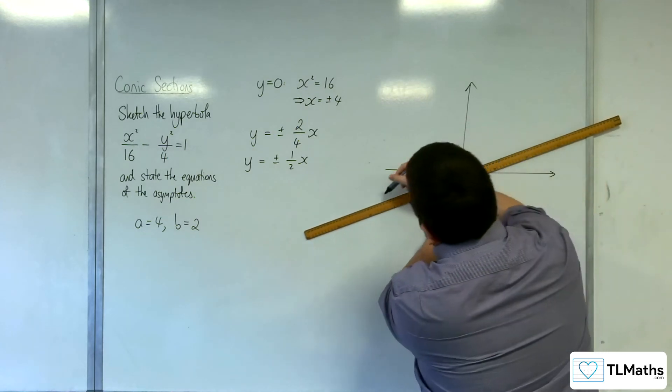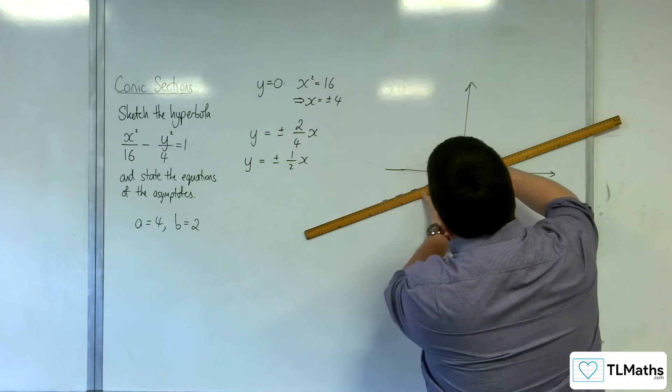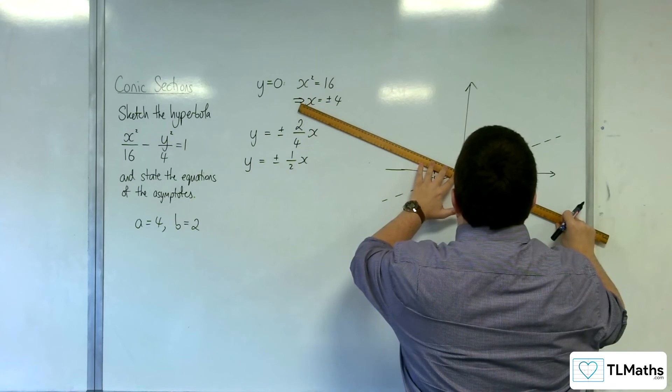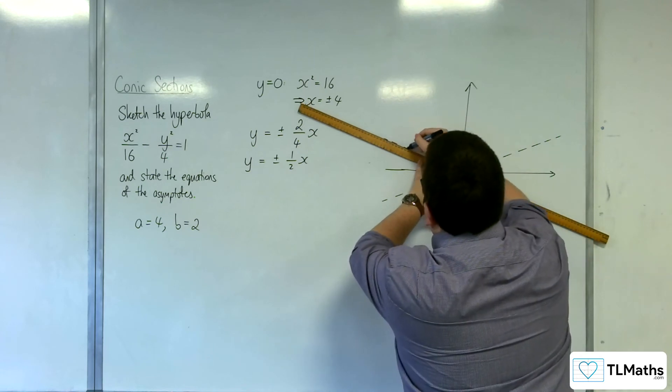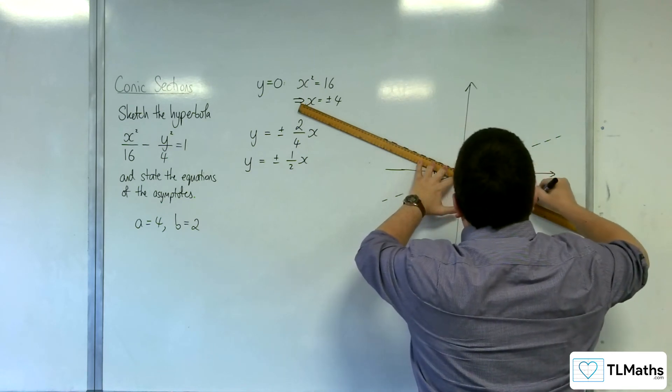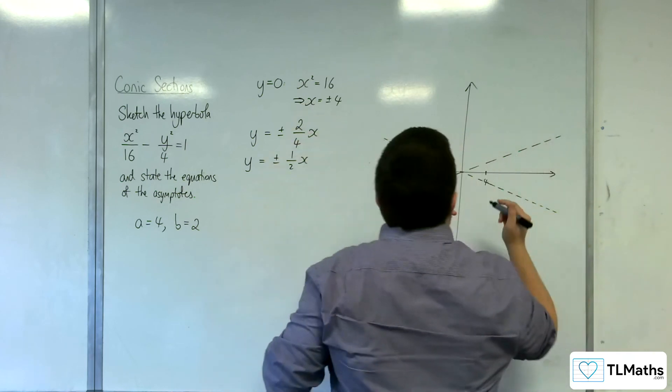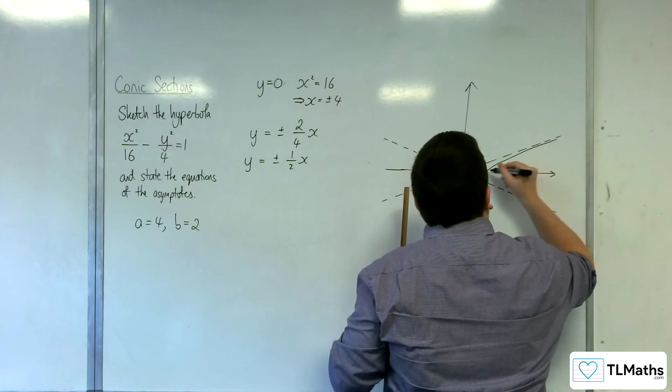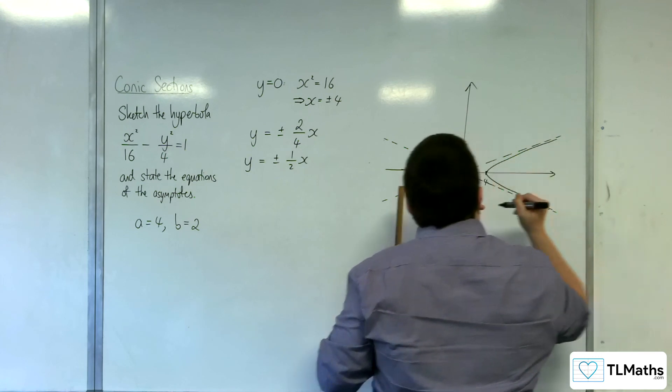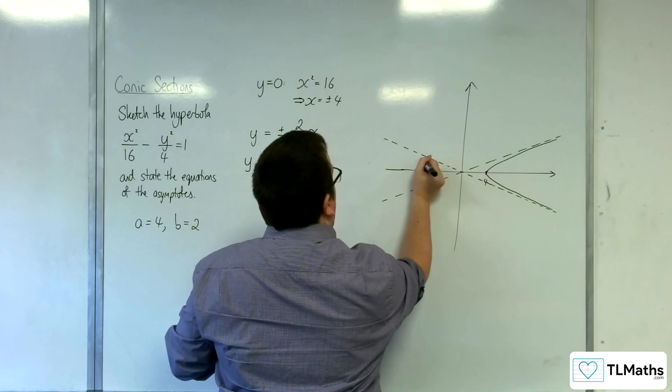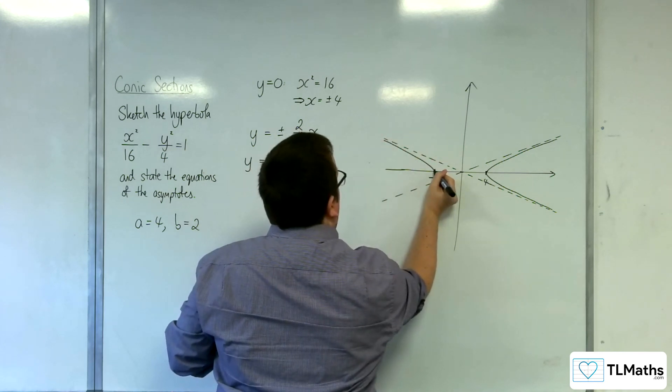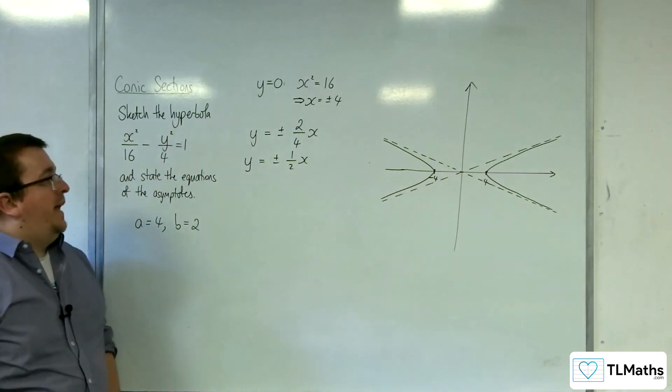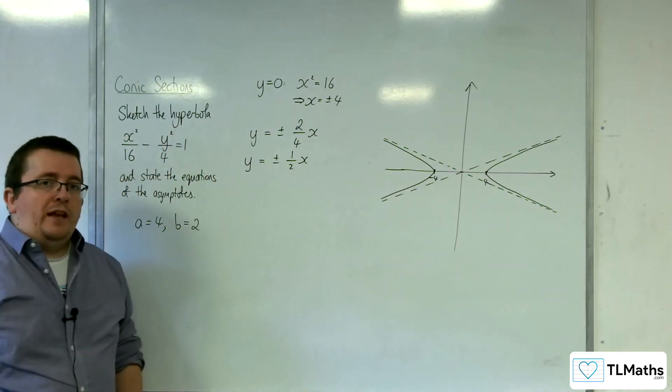So it looks something like this. So the curve needs to do something like that. And so that is how we can sketch the curve and find its asymptotes.